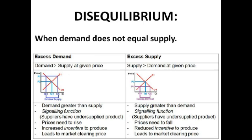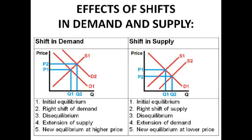A fall in price leads to an extension of the demand curve, because if prices are lower, people buy more. This means that Qd and Qs come together and become equal at Q2, which occurs when the price is P2 — the new market clearing price.